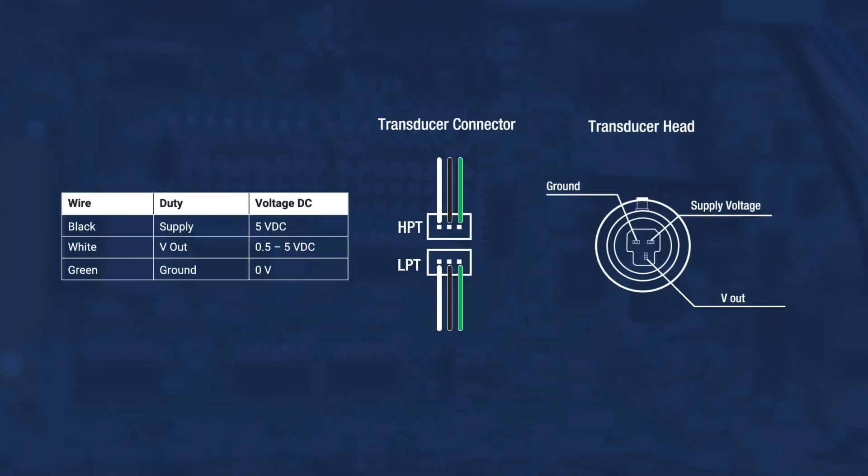A 5 volt DC signal is supplied by the unit controller on the black wire. As the diaphragm deflects, the transduction element affects the 5 volt DC signal and sends a variable voltage out on the white wire which is translated by the unit controller as a pressure. The green wire is used as a ground reference for the 5 volt DC signal.